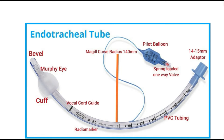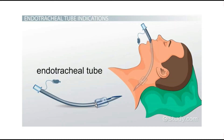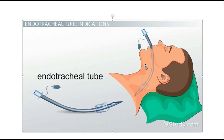This is an endotracheal tube. It has a magic curve radius of around 140 millimeters — that is the radius of the curve, which helps with easy insertion. The tube has an adapter, a beveled tip with the bevel eye kept upwards, a Murphy's eye that allows air entry when the main opening is blocked, a cuff to fix the tube in place, and a radio-opaque blue line marker used to locate the tube's position on X-ray after placement.